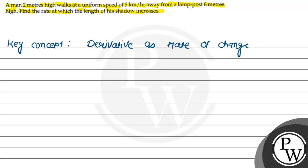Now, looking at the condition, figure out the type. The man is 2 meters high and walks at a uniform speed away from a lamp post of 6 meters. So the lamp post is obviously vertical — this is 6 meters. What is our lamp post?